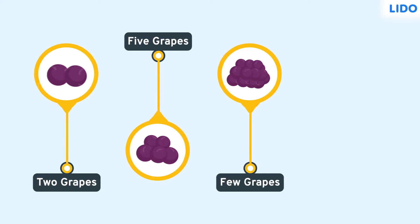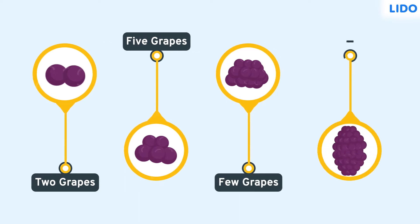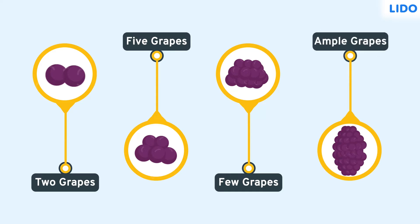But if you had a big bunch of grapes, you wouldn't call it a few grapes, would you? You'd say that you have ample grapes. So if the quantity increases, a few turns into ample.